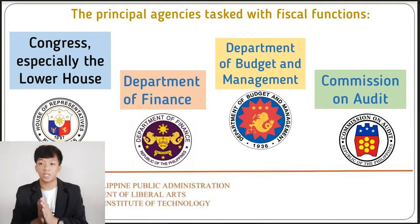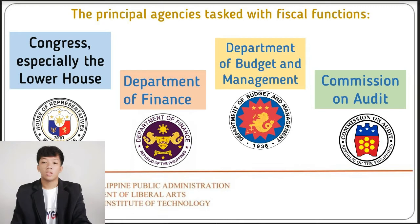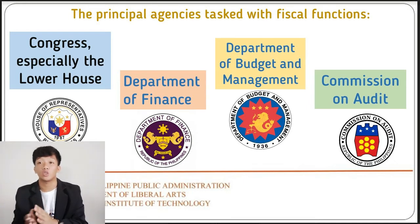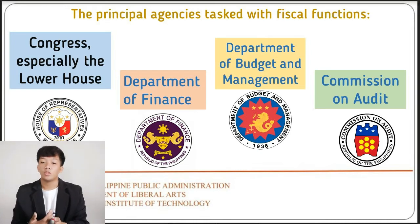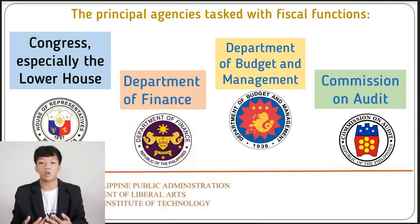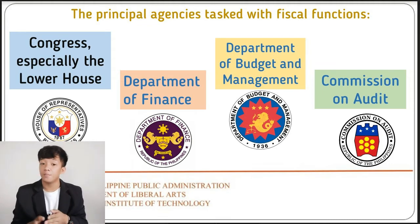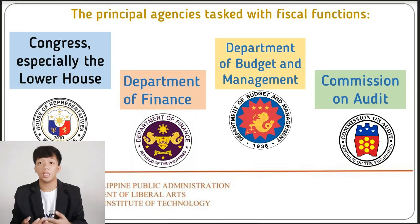These are the principal agencies tasked with fiscal functions. First, we have Congress, which is responsible for revenue and expenditure policies. We also have the Department of Finance, responsible for revenue generation and collection, fund custody and disbursements, and keeping of accounts. We have the Department of Budget and Management, which handles review of estimates and fiscal policy studies in close consultation with NEDA. And lastly, the Commission on Audit, which conducts fund and performance audits to ensure expenditures are in accordance with the appropriation law approved.